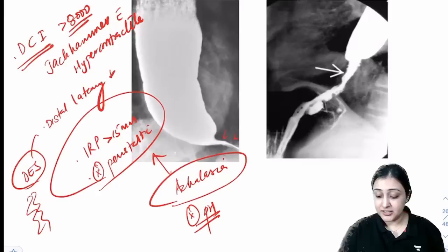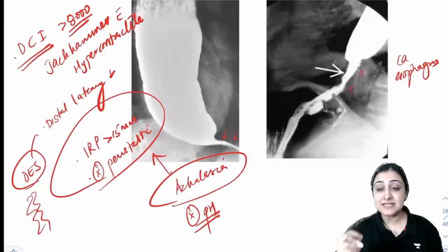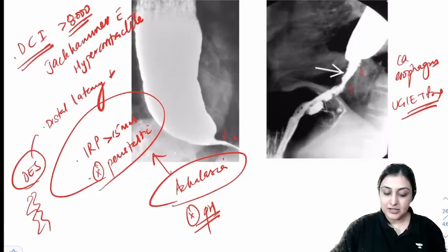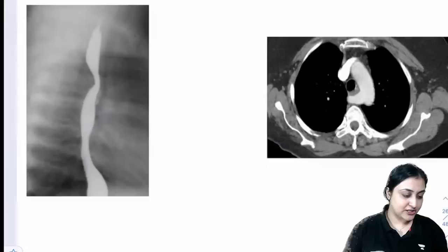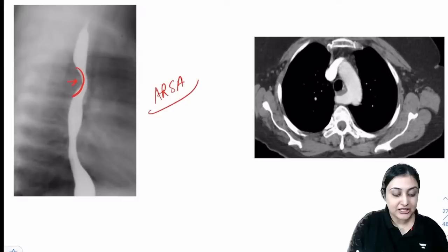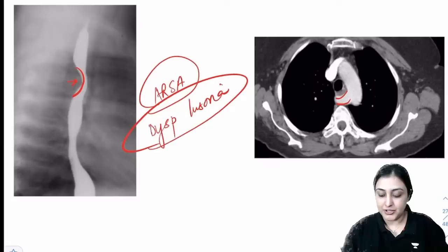Carcinoma esophagus: rat-tail appearance (irregular narrowing at distal esophagus) on barium. Investigation of choice: upper GI endoscopy with biopsy. For staging: T and N — endoscopic ultrasound (EUS); M — PET-CT. Aberrant right subclavian artery (dysphagia lusoria): posterior indentation on esophagus without narrowing on barium — most common arch variant. ARSA is the 4th branch of aorta, passes behind esophagus.